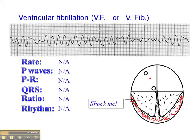Unlike atrial fib, where we can clearly survive — when the atria are a quivering mass of myocardium — when the ventricles quiver, there's no cardiac output and the patient becomes vital signs absent. So there's no pulse, they're unresponsive, and if they don't have agonal respirations, they'll be in respiratory arrest as well, or they'll be apneic.